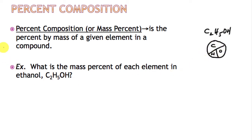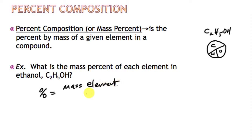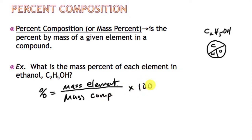These are percentages just like you've dealt with in math. For a percent composition, what we're going to do is take the mass of each of the elements we have over the mass of the compound, then multiply that by 100 — just like you would for any percentage. You're figuring out what the part is over the whole.